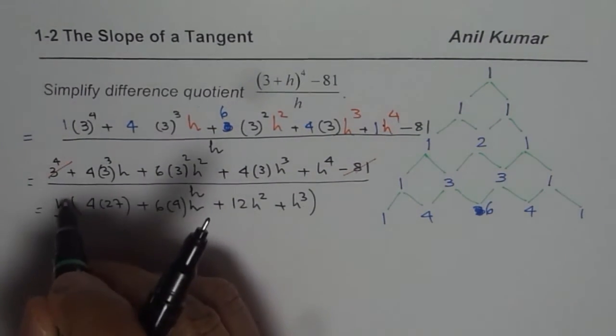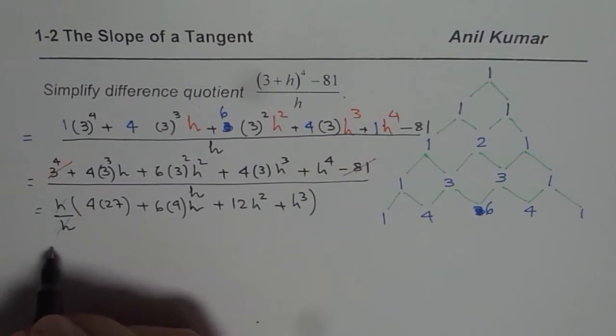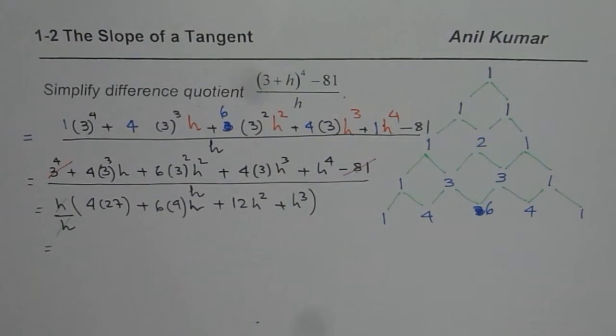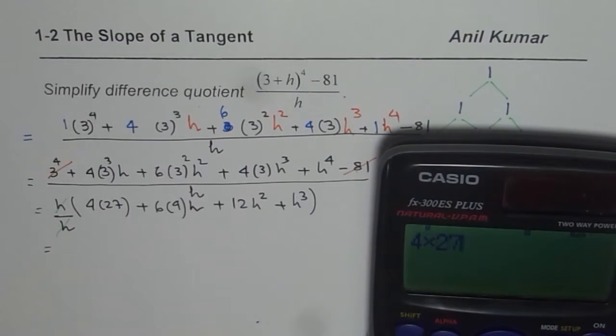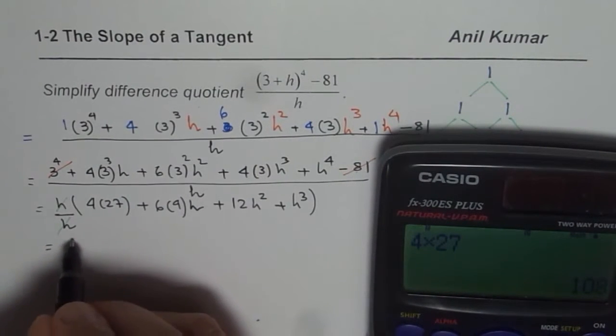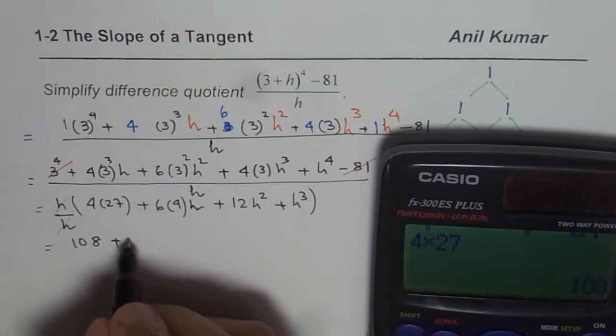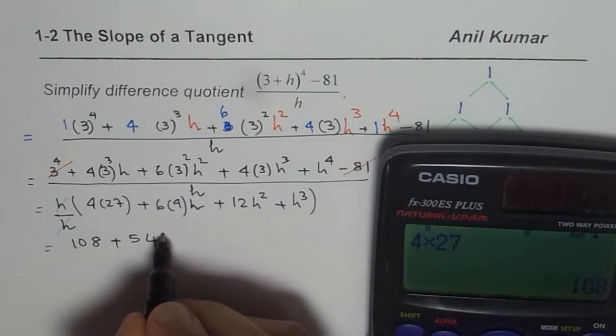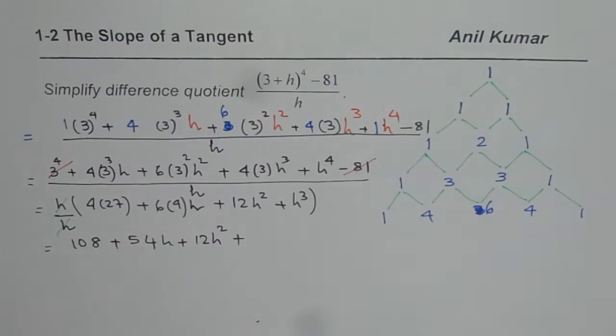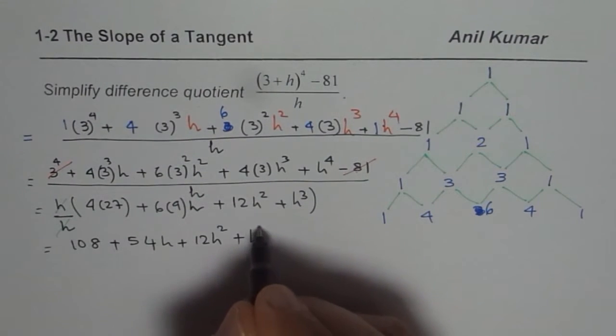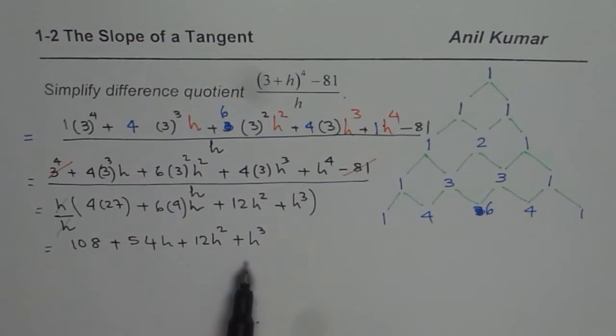Now h and h cancel out. So you could simplify this as these numbers. So let me take the calculator to calculate these values. So we have 4 times 27 equals to 108, plus 6 times 9 which is 54 h, plus 12 h squared plus h cubed. Now this is the simplified expression for the given expression. So that is how you could simplify it.